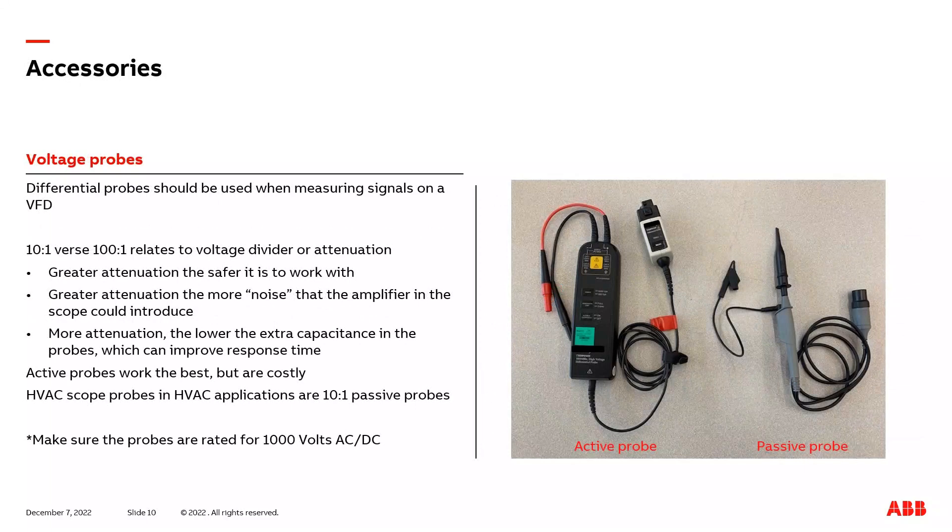Once the scope has been selected, it's time to think about accessories to go with the scope. We'll first talk about voltage probes. Since a VFD's DC bus and output waveform are not referenced to earth ground, we'll want to select a differential style voltage probe. Now, one of the first spec items you may notice when looking at different voltage probes is, is it a 10 to 1 or 100 to 1? All that means is how much is the incoming voltage divided by before it's inputted into the scope. If it's 480 volts divided by 10, it's 48 volts. If it's 480 volts divided by 100, it's 4.8 volts that's inputted into the scope. Obviously, the greater the attenuation, you would say, that's safer to work with.